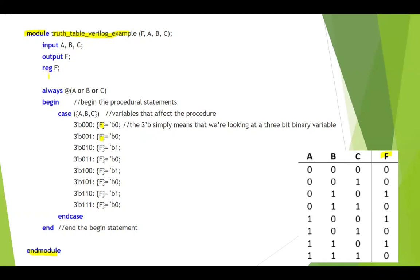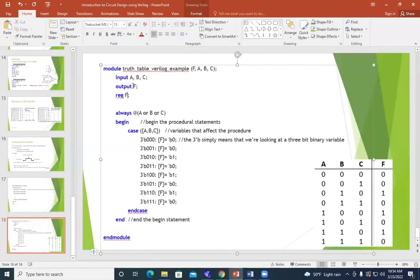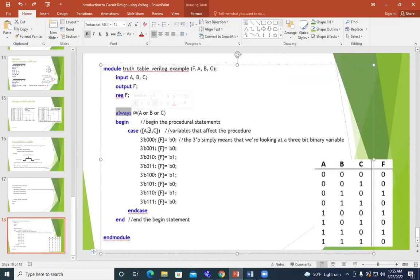So we want to add F to the outputs, and we also need to declare it as a register — reg F. I can declare it as output reg F in one line. Then I add the always block. The output depends on the signals in the sensitivity list, which will drive the always block.